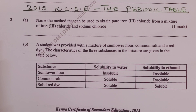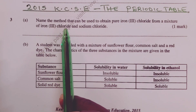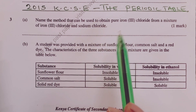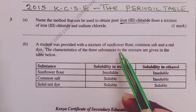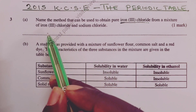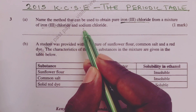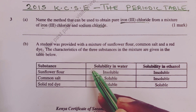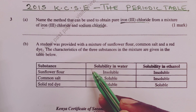This video covers separation of mixtures and the periodic table as tested in the 2015 KCSE Chemistry Paper 2, Question 3. Part A asks: name the method that can be used to obtain pure iron(III) chloride from a mixture of iron(III) chloride and sodium chloride. This part of the question tests knowledge from Form 1 work on separation of mixtures.